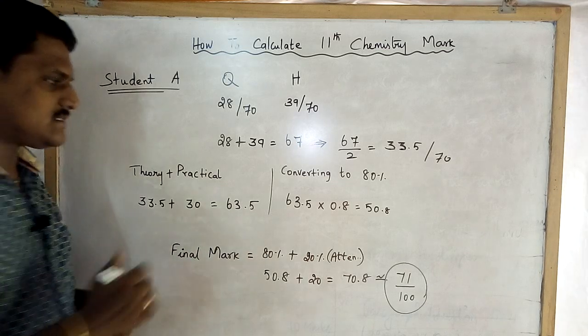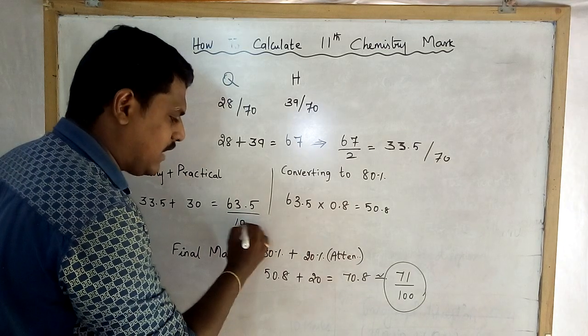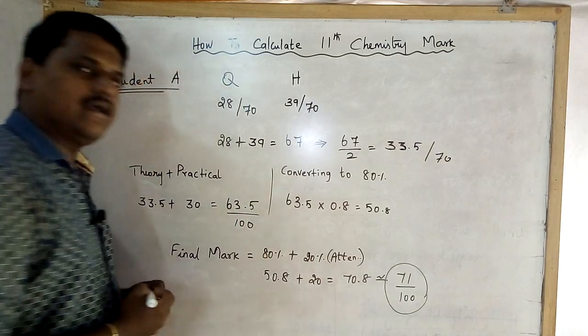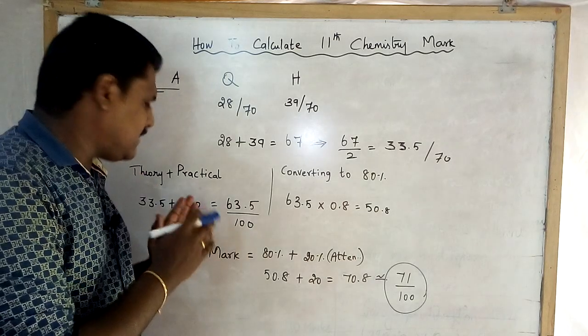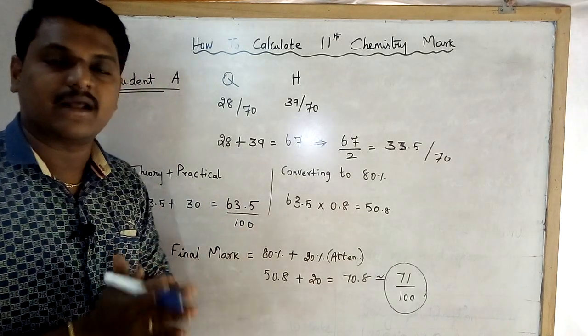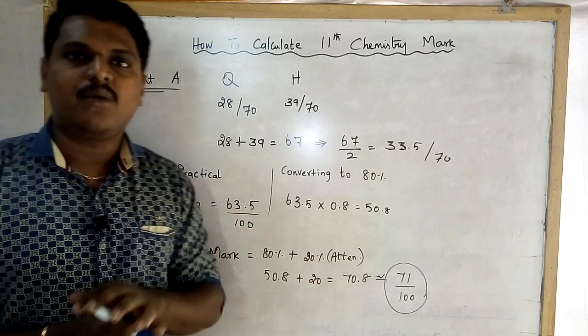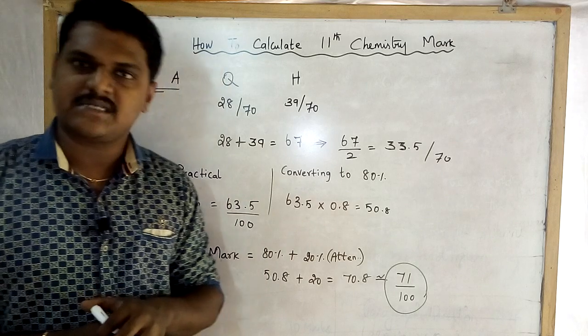33.5 plus 30 is equal to 63.5. So out of 100, 63.5 is the combined theory and practical mark out of 100.